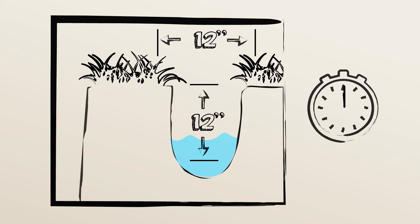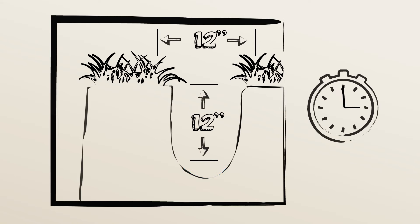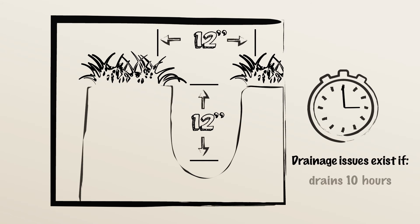Don't forget to note the time, because if the soil drains well, all the water should be gone in two to three hours. But if it drains in less than two hours, or takes more than ten, you have drainage issues, and most plants will grow poorly in that area.